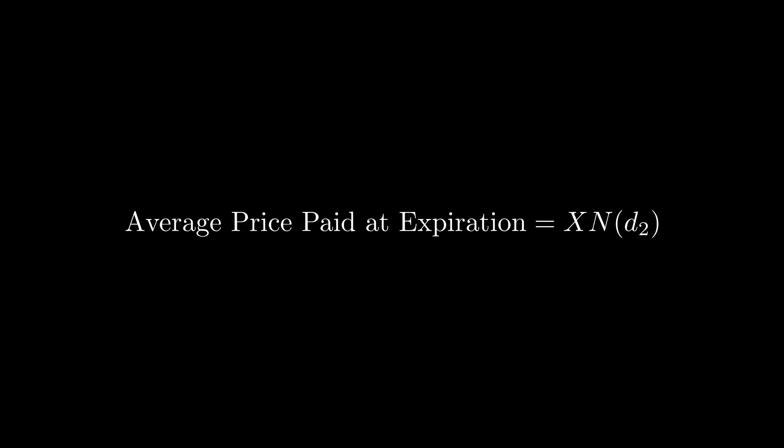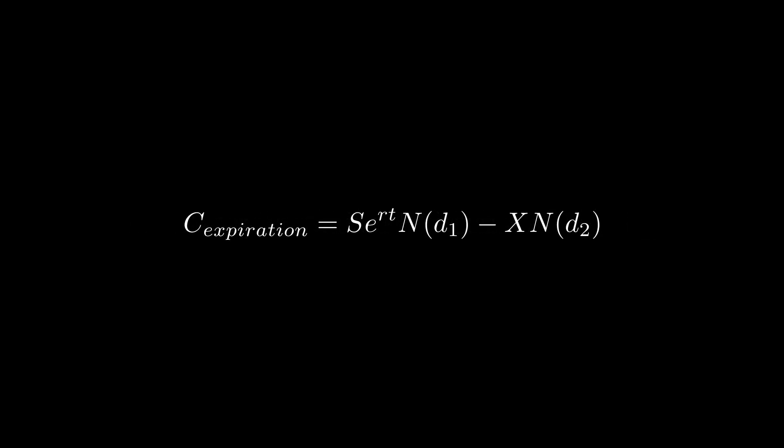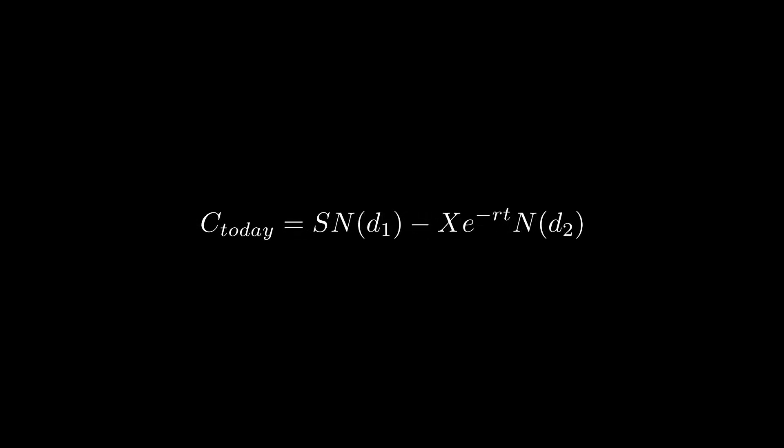Combining this with the first term gives us the expected value of the call option at expiration. But because we're paying for the option today, we have to adjust for the present value. Multiplying both terms by e to the power of negative RT gives us the familiar Black-Scholes model, ensuring that it reflects the fair price of the option in today's terms.